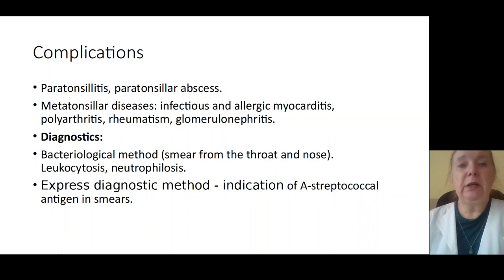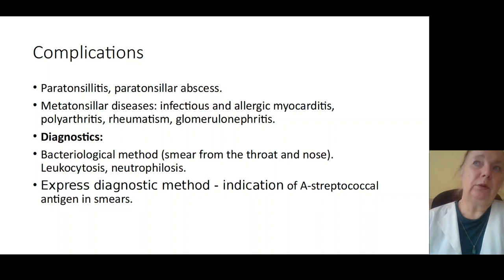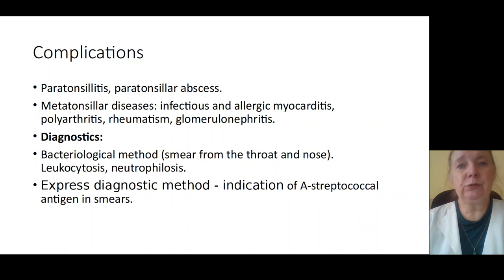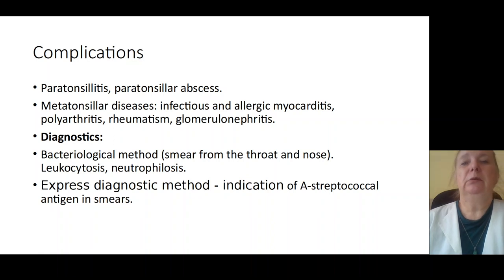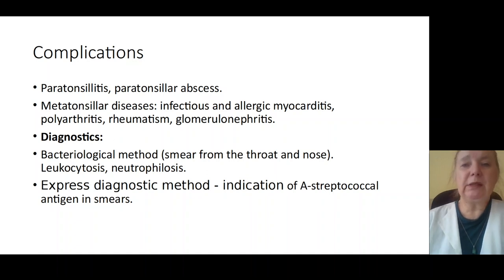Metatonsillar disease manifests two weeks after acute infection and is characterized by involvement of internal organs in pathological process — for example, formation of myocarditis, polyarthritis, rheumatism, and glomerular nephritis.